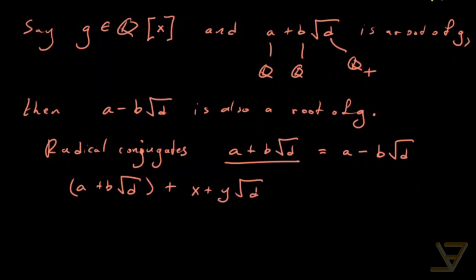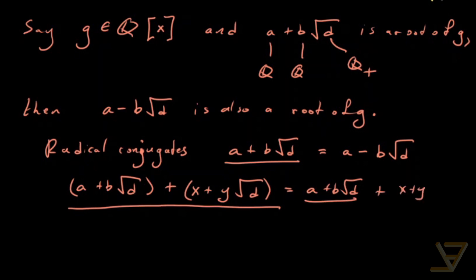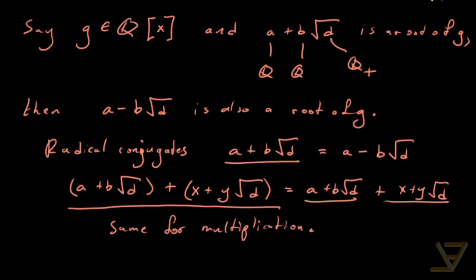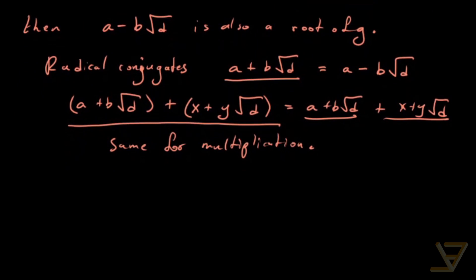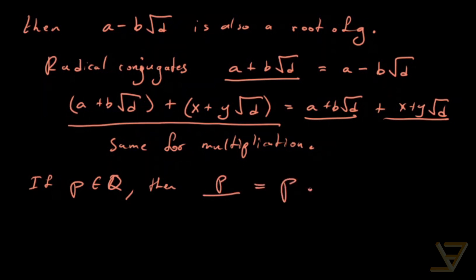What we find is that the underline distributes over addition: a plus b square root of d plus x plus y square root of d, all underlined, equals each term underlined separately. The same holds for multiplication. And the key analogous property — corresponding to the conjugate of a real number being itself — is that if p is rational, then p underlined equals p, since there is no irrational part. I'll leave it to you to prove that if a plus b square root of d is a root of a rational polynomial, then a minus b square root of d is also a root of g.